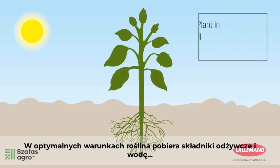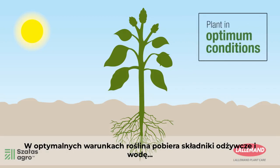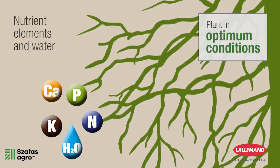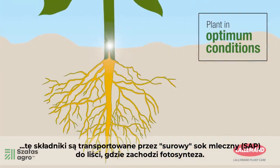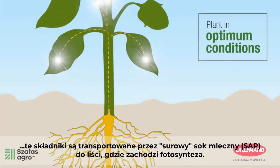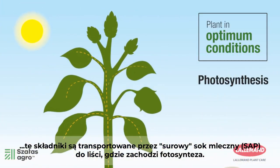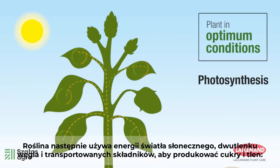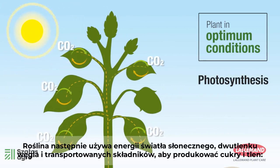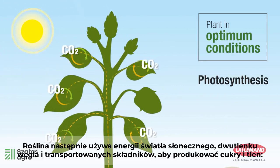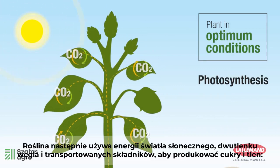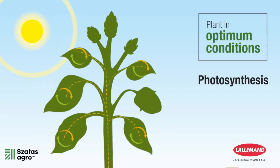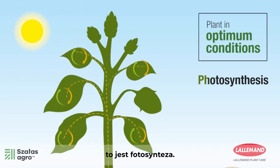In optimum conditions, the plant is supplied with nutrients and water. These elements are transported by the raw sap to the leaves, the site of photosynthesis. The plant then uses light energy, carbon dioxide, and the transported elements to produce elaborate sugars and oxygen. This is photosynthesis.